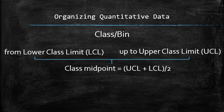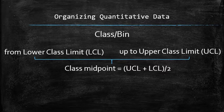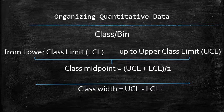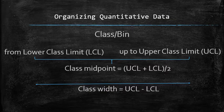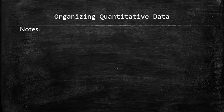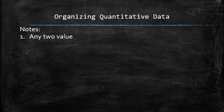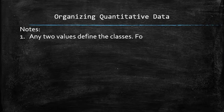We define the class midpoint as the average of the lower limit of the class and the upper limit of the class. We also define the class width as the difference between the lower limit of the class and the upper limit of the class. Note that because of all the formulas that relate these quantities, we only need two of the four of them to define the entire class structure.